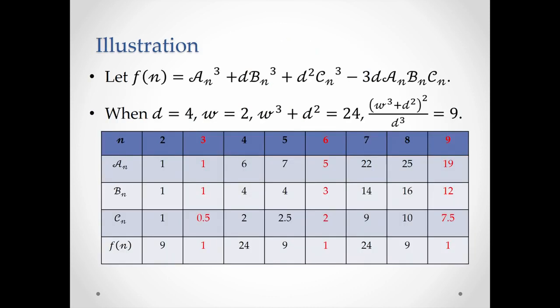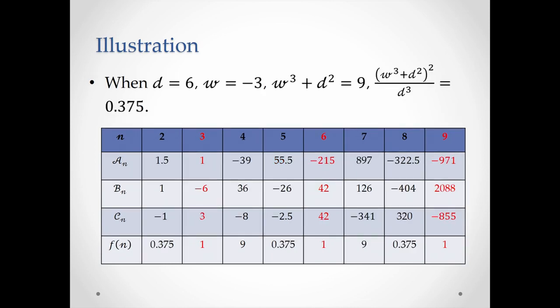Here are the illustrations. For example, when d = 4 and if we take w = 2, then we can find that when n is congruent to 0 mod 3, aₙ, bₙ, and cₙ are solutions to the cubic Pell's equation. Particularly, when n = 6, aₙ, bₙ, and cₙ are integer solutions to the cubic Pell's equation. Also, when d = 6 and if we take w = −3, when n is congruent to 0 mod 3, aₙ, bₙ, and cₙ are all integer solutions to the cubic Pell's equation. We can also find that the solutions generated by this method are very large, meaning that even very large solutions can be generated efficiently.